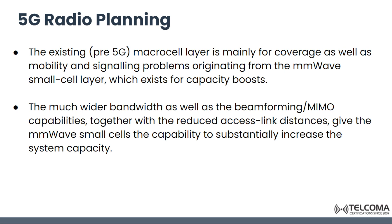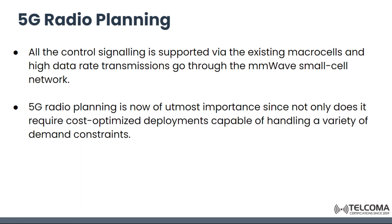The much wider bandwidth as well as the beamforming or MIMO capability, together with the reduced access link distances, give the MM wave small cells the capability to increase the system capacity. All the control signaling is supported by the existing macro cells, while high data rate transmission goes through the MM wave small cell network.